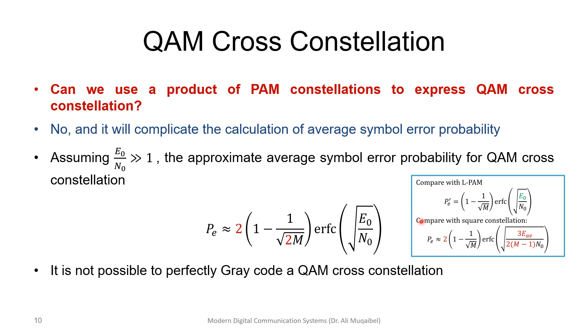I'd like you to compare with the case of PAM and with the case of square constellation. This equation is for square constellation, and this equation is for cross-constellation. If you have cross-constellation, it might not be possible to use Gray coding perfectly.